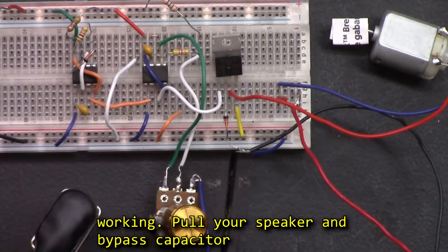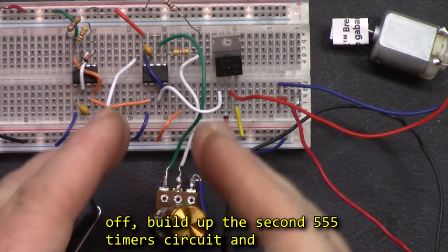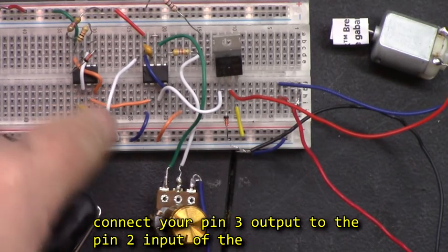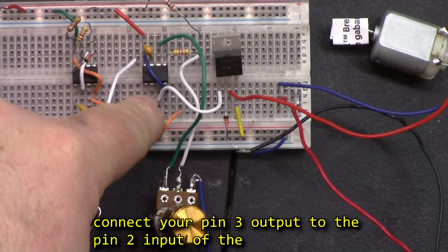Now you know that circuit is working. Pull your speaker and bypass capacitor off, build up the second 555 timer circuit, connect your pin 3 output to the pin 2 input of the second chip.